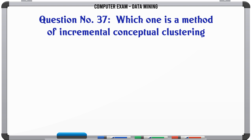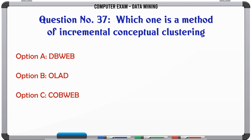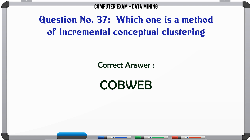Which one is a method of incremental conceptual clustering? A. D. B. WEB. C. Cobweb. D. Catweb. The correct answer is Cobweb.